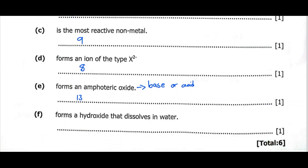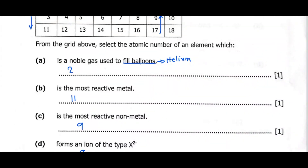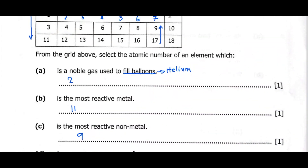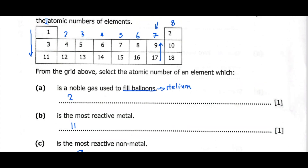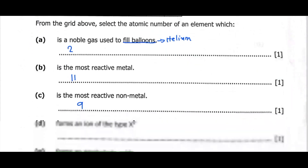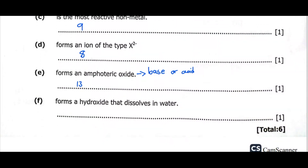E forms an amphoteric oxide. An amphoteric oxide is a type of oxide that behaves as a base or an acid, depending on what it is reacting with. An example of an amphoteric oxide is aluminum, which has an atomic number of 13. For F, which forms a hydroxide that dissolves in water — the hydroxides of all group 1 elements dissolve in water. So we can get 1, 3, or 11; let's just say 1.